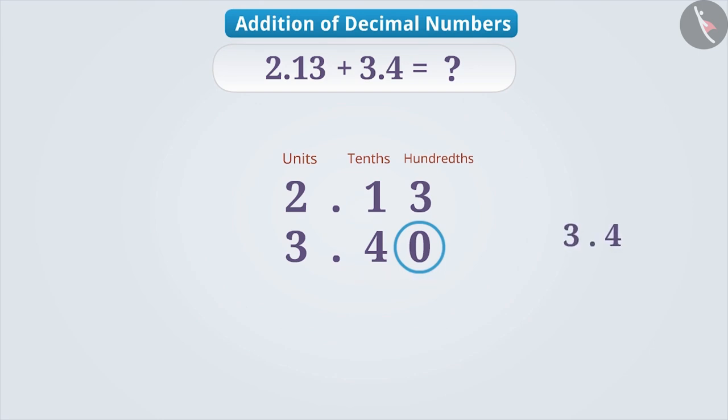Always remember that. It is correct to add 0 after a non-zero digit in the decimal number, and it is incorrect to add 0 before the non-zero digit after the decimal point because this changes the value of numbers.